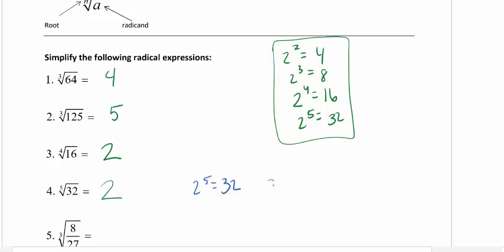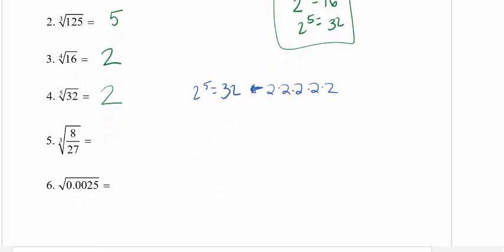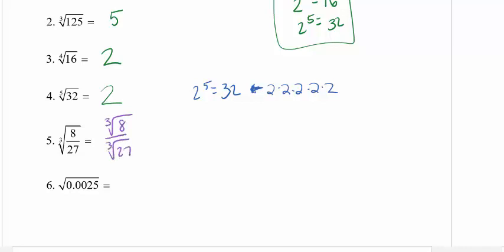Remember, 2 to the 5th equals 32, which means 2 times 2 times 2 times 2 times 2. We're asking what would we raise to that power to get to that answer of the radicand, which is underneath. Going to number 5, we have a fraction, which tends to throw people off. But this is truly what you're doing: you're taking the cube root of 8 and the cube root of 27. The cube root of 8 is 2, and the cube root of 27 is 3 — that's my answer.